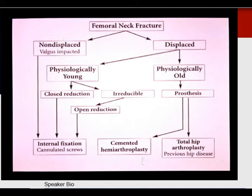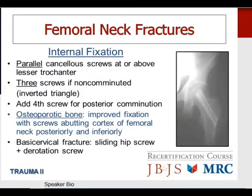Internal fixation of femoral neck fractures is typically performed with parallel cannulated screws placed at or above the level of the lesser trochanter — avoid going below to prevent creating a stress riser. A three-screw inverted triangle configuration is appropriate for most fractures. If there is significant posterior comminution, a fourth screw can be added. In osteoporotic bone, improved fixation has been demonstrated with screws adjacent to the femoral cortex — a postero-inferior calcar screw and a screw adjacent to the posterior cortex in the inverted triangle configuration.